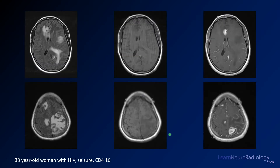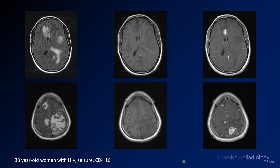Here you see a 33-year-old woman with a very low CD4 count of 16. On FLAIR, there are multifocal areas of abnormality — hyperintensity in multiple regions including around the ventricle. On pre-contrast T1, there's no intrinsic T1 hyperintensity, but these lesions are avidly enhancing. You see a lesion in the anterior cingulate enhancing, lesions in the frontal lobe enhancing, and a target sign with an outer rim of enhancement and a central area of enhancement. That's the target sign, which is often seen in toxoplasmosis.